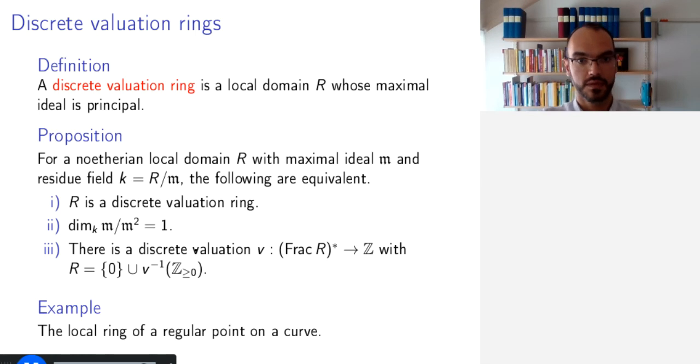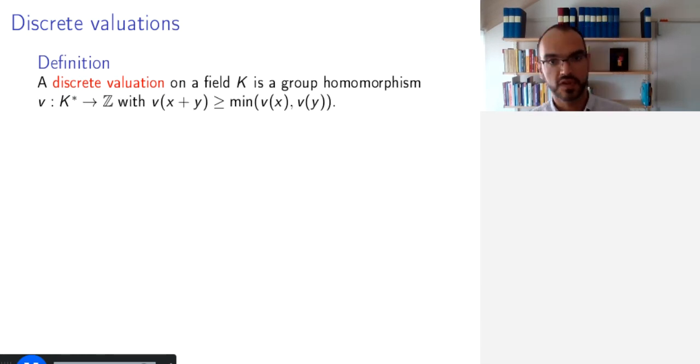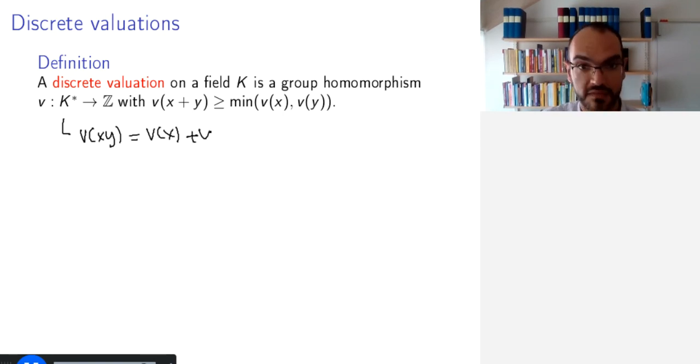So what is a discrete valuation? A discrete valuation on a field K is a group homomorphism from the multiplicative group of the field to the integers. This means that if I take V of XY, I get V of X plus V of Y. In addition, I require that there is some well behavior with respect to the sum. The value of the sum is greater than or equal to the minimum of the two values.